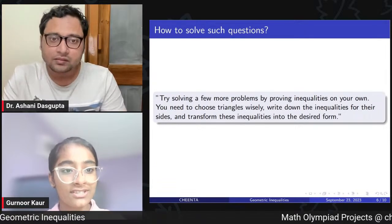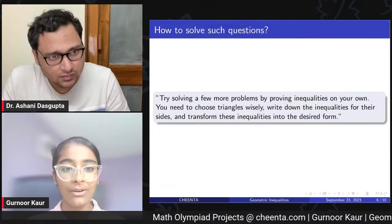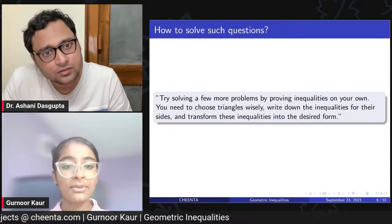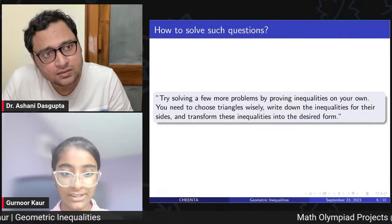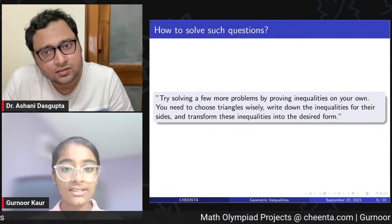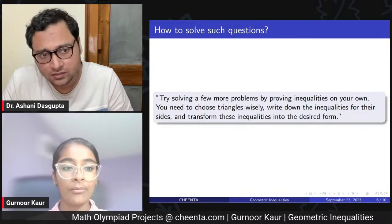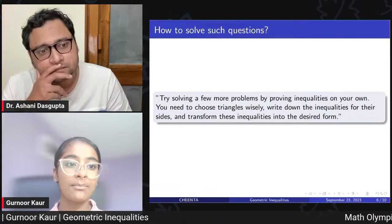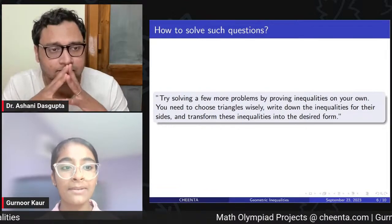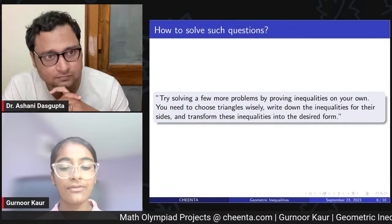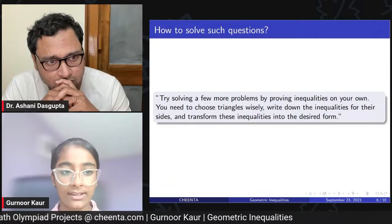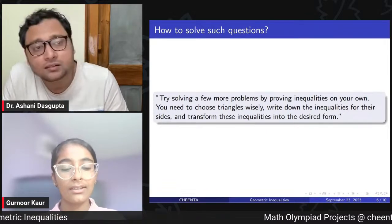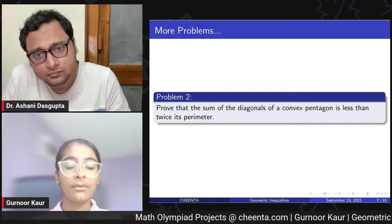Gurnoor explains the author's recommendations: We should try solving more problems by proving inequalities on our own. We need to choose triangles wisely, write down the inequalities for their sides, and then transform these inequalities to the desired form. We won't always get what the question asks for right away, so we have to perform operations with the triangular inequalities to get the desired result.